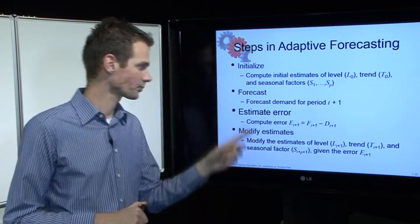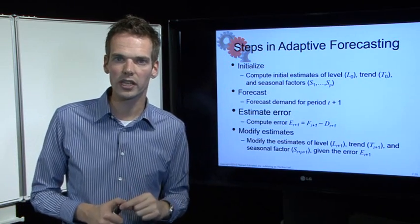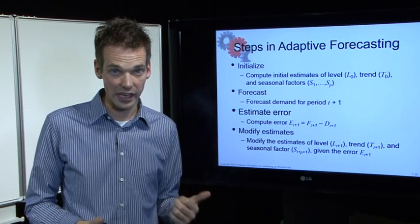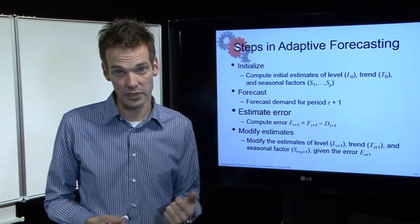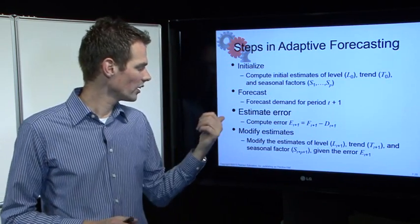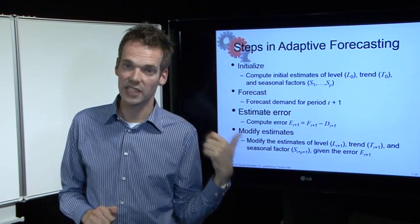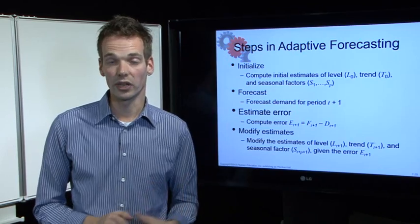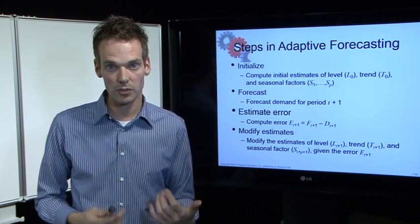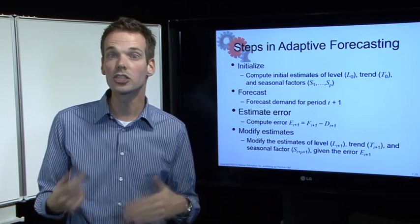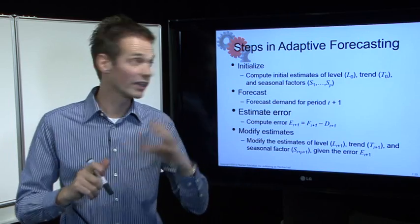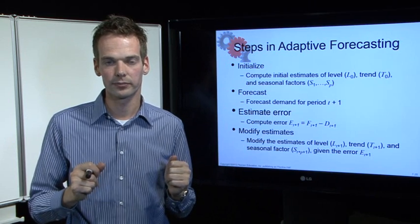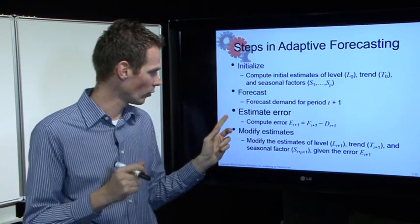The third one is estimate error. The estimate error and modify the estimates are linked into learning objective number four. In step number three, we compute the error of the forecast error. And in the fourth step, we will analyze those errors and based on that analysis, we will change our forecast as to minimize our forecast error.